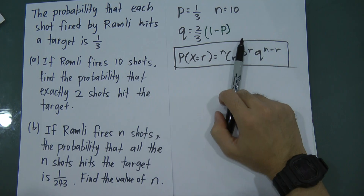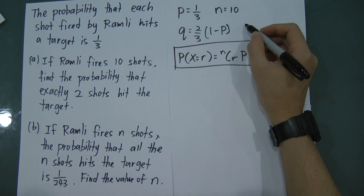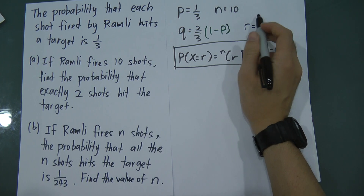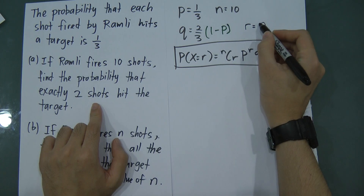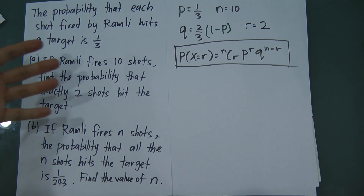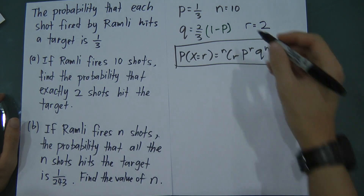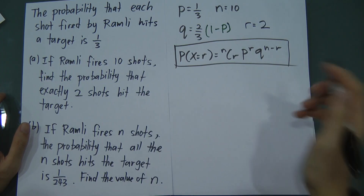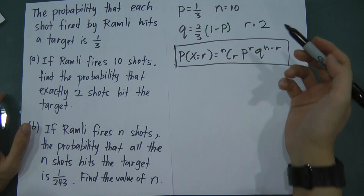n is the total number of tries — like the total sample. r is how many times the event actually occurs out of n tries. In this case, he says exactly two shots hit the target, so r = 2. Note that sometimes the question says 'at least two,' meaning r ≥ 2, and you'd need to sum probabilities for r = 2, 3, 4, up to 10. But here it's exactly two, so it's straightforward.